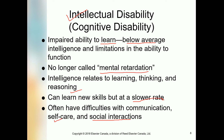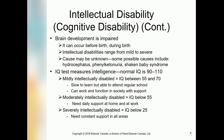As a personal support worker working with these children, we must assist them and help them according to the care plan. Brain development is impaired — meaning it is not functioning well. This can occur before birth or during birth. Intellectual disabilities range from mild to severe and may be very difficult to manage. Some possible causes include hydrocephalus, where water is collected and retained in the head.